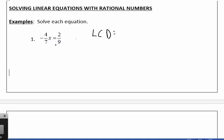So the least common denominator in this case would be the smallest number that 7 and 9 go into. In this case it happens to be the product of the 2, it's not always the product of the 2, but in this case it is. So I'm going to multiply both sides by 63, and let me rewrite that.